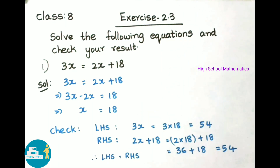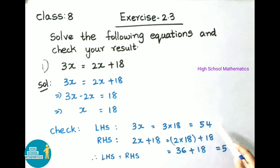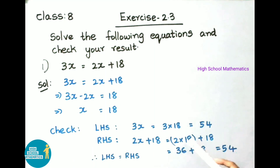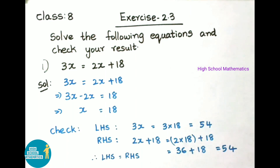Now let us check. LHS is 3x = 3 × 18 = 54. RHS is 2x + 18 = 2 × 18 + 18 = 36 + 18 = 54. LHS value and RHS value both are equal. Therefore LHS = RHS, so result is correct.